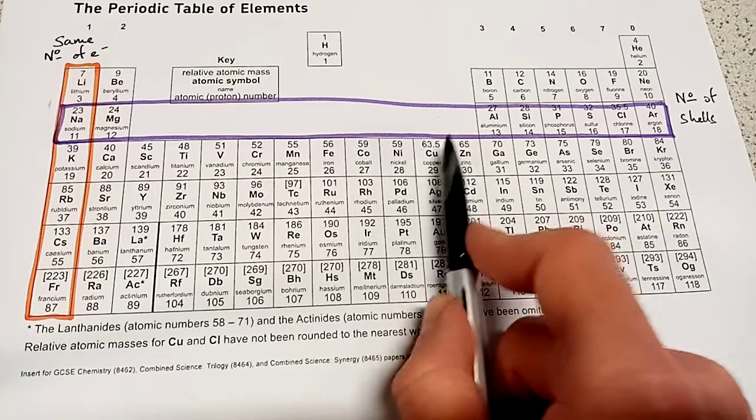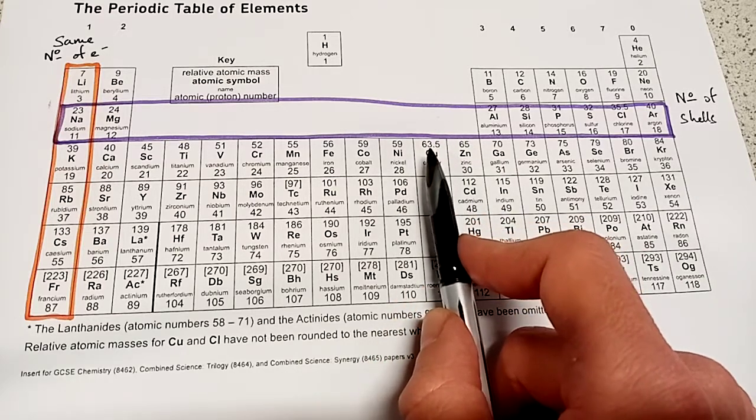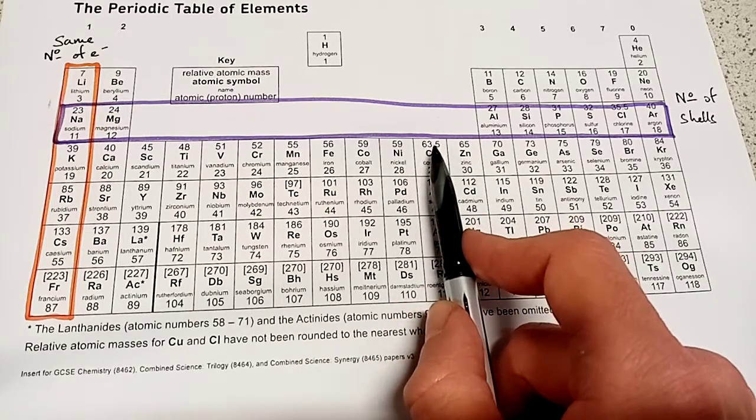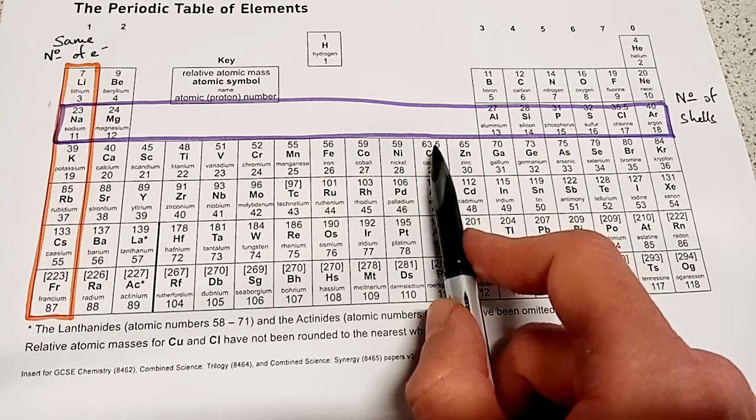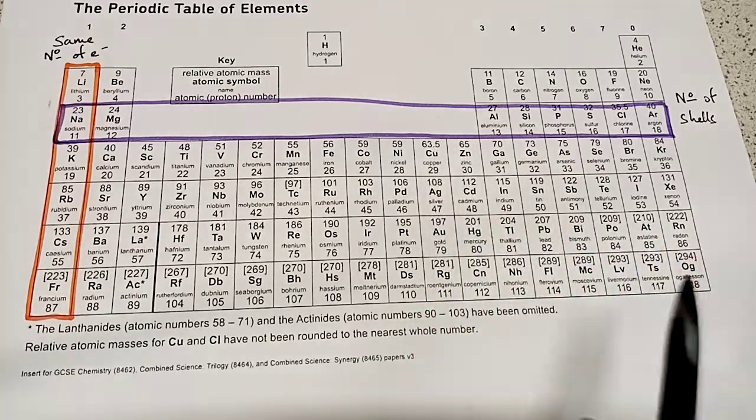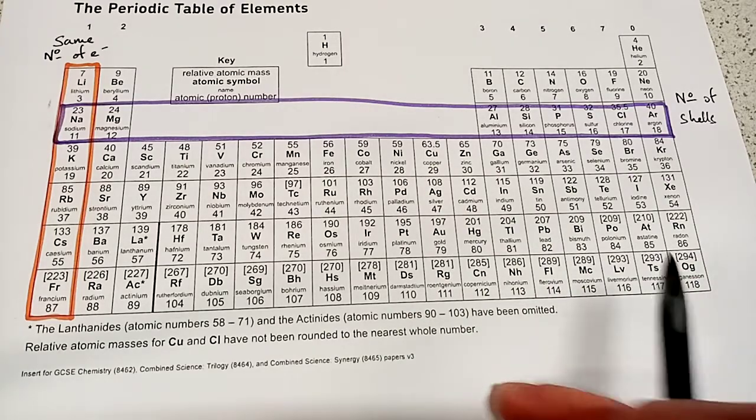Now as we know, the relative atomic mass is the sum of the number of protons and the number of neutrons. So how can it have a relative atomic mass of 63.5? Because you can't really have half a proton or half a neutron, can you?